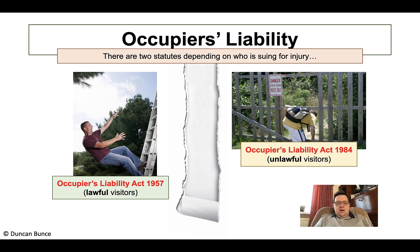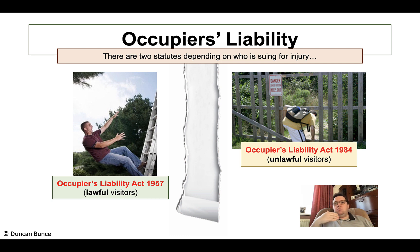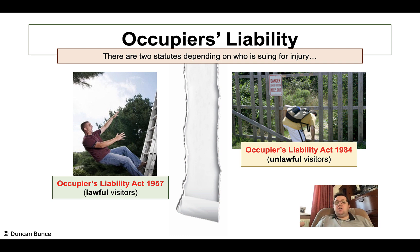The 1957 Act only applies where the person who is injured on premises is lawfully allowed to be there — has permission to be there. On the other side, we have unlawful visitors, so typically people such as trespassers.